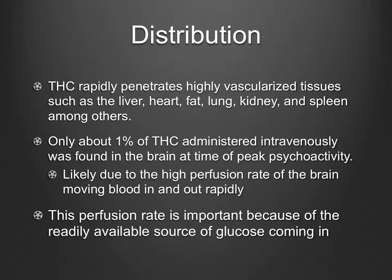The distribution of cannabinoids such as THC greatly depends on how vascularized tissue is. THC rapidly penetrates highly vascularized tissue such as in the liver, heart, fat, lungs, kidneys, and spleen, among others. Only about 1% of THC administered intravenously was found in the brain at the time of peak psychic activity. This is likely due to the high perfusion rate of the brain moving blood in and out rapidly — a rate that is important because there's a readily available source of glucose coming in. Later we'll see why this perfusion rate matters and how cannabis constituents can affect it.